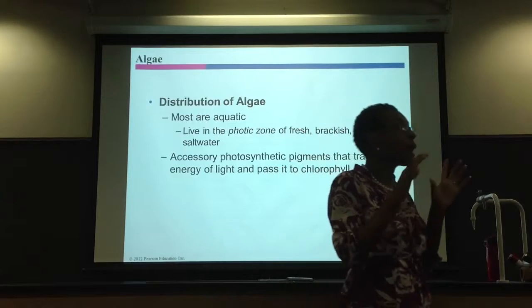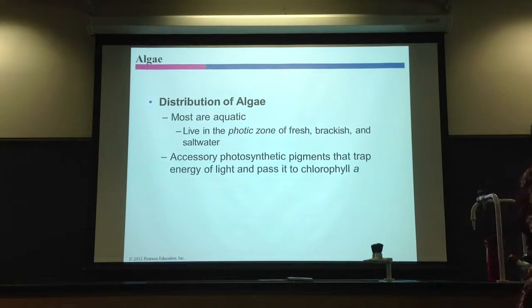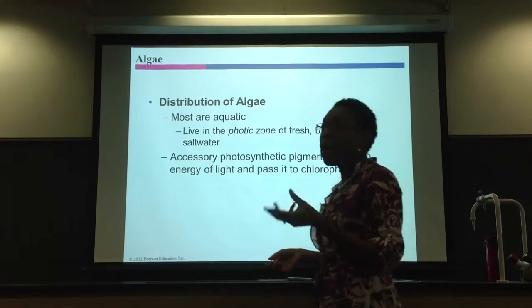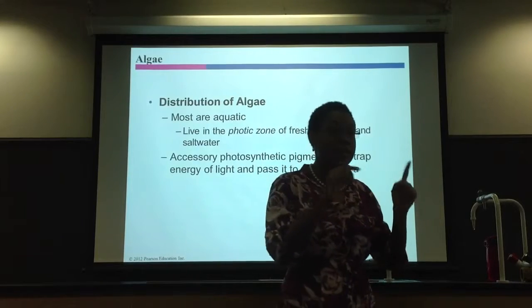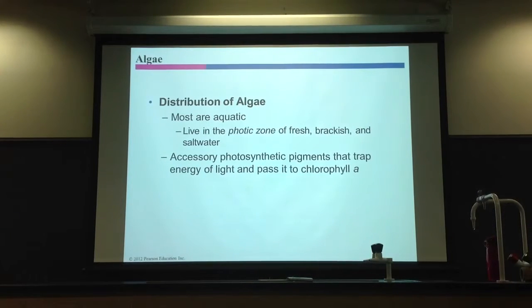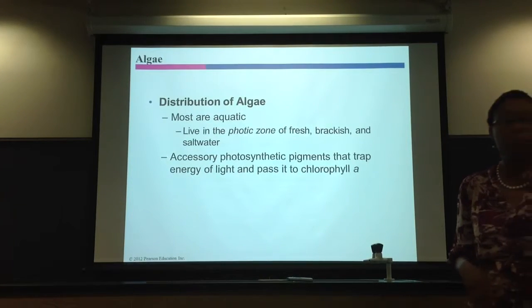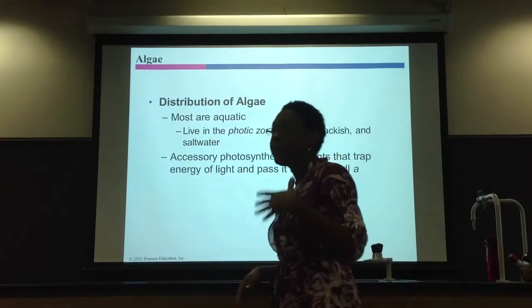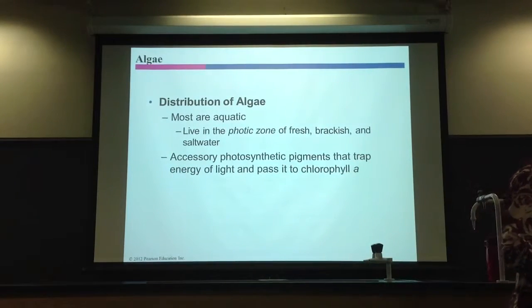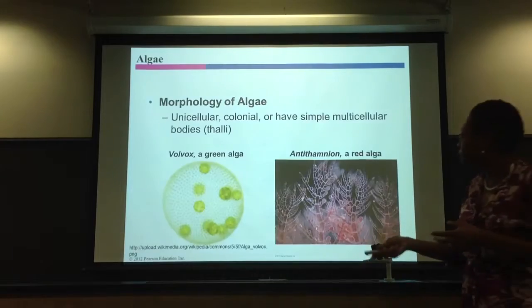Now we're getting into the algae. What do you need to know about algae? They are all photosynthetic because they all have pigments — they have chlorophyll or different pigments used for photosynthesis. How we place algae into categories is based on what pigment they have: red algae, green algae, golden algae. Algae have cell walls just like plants do. Most algae are aquatic, though some are terrestrial.